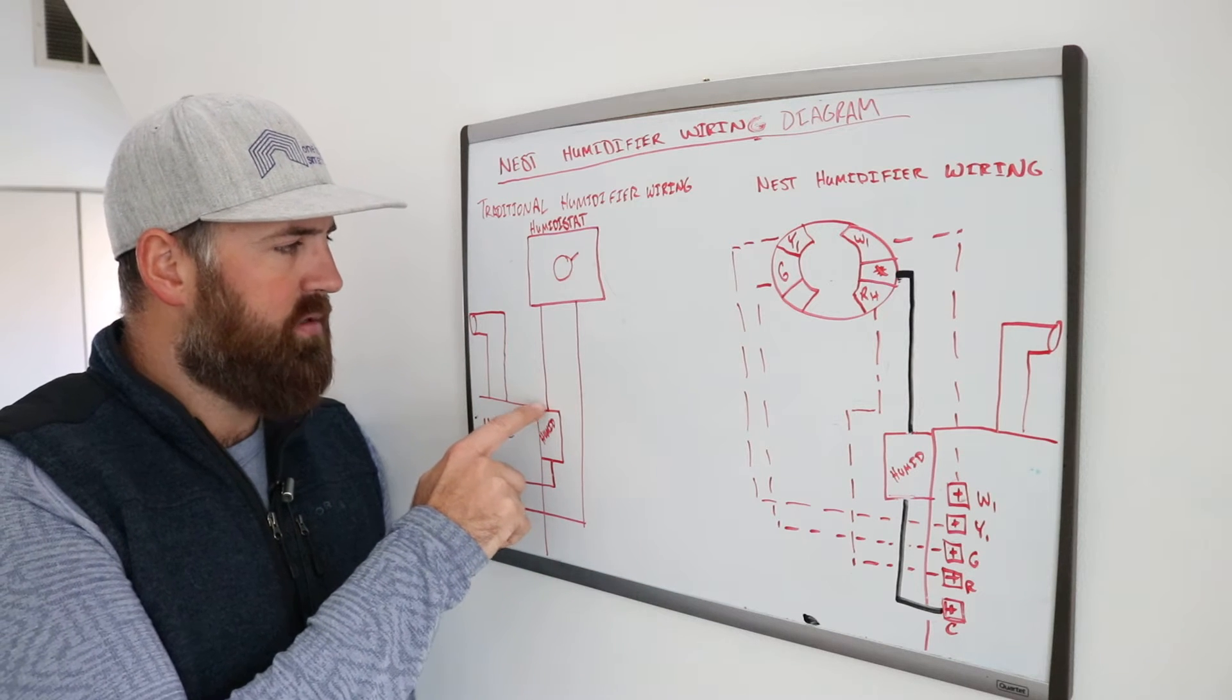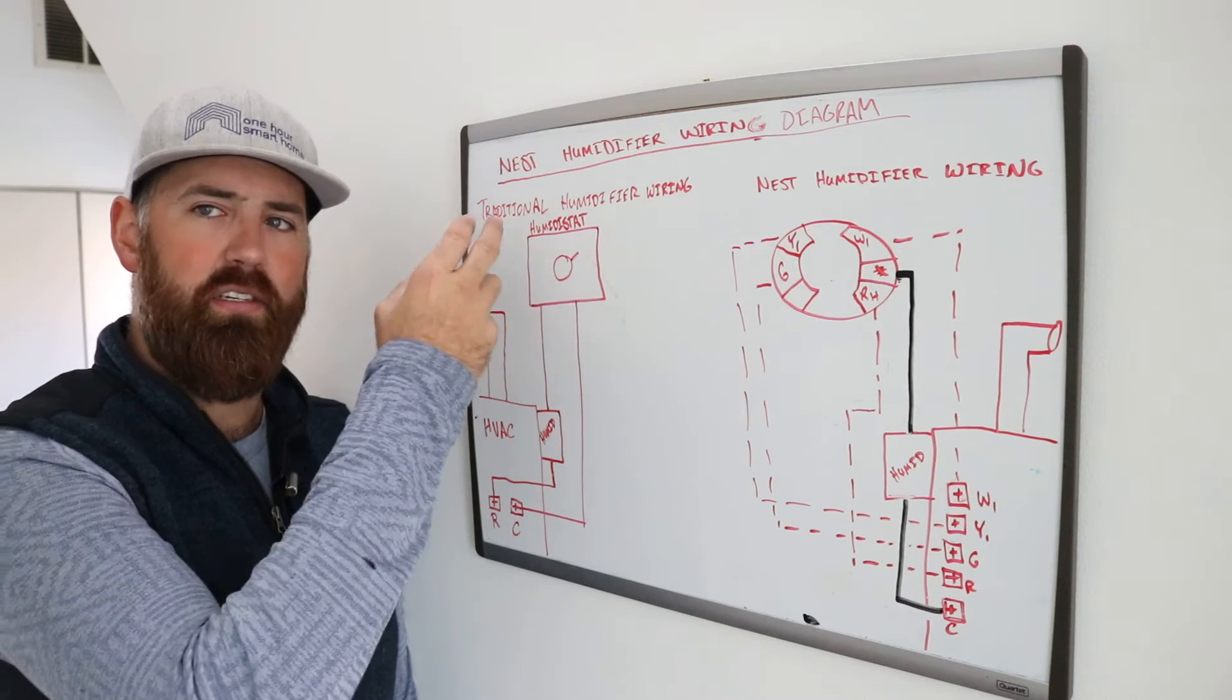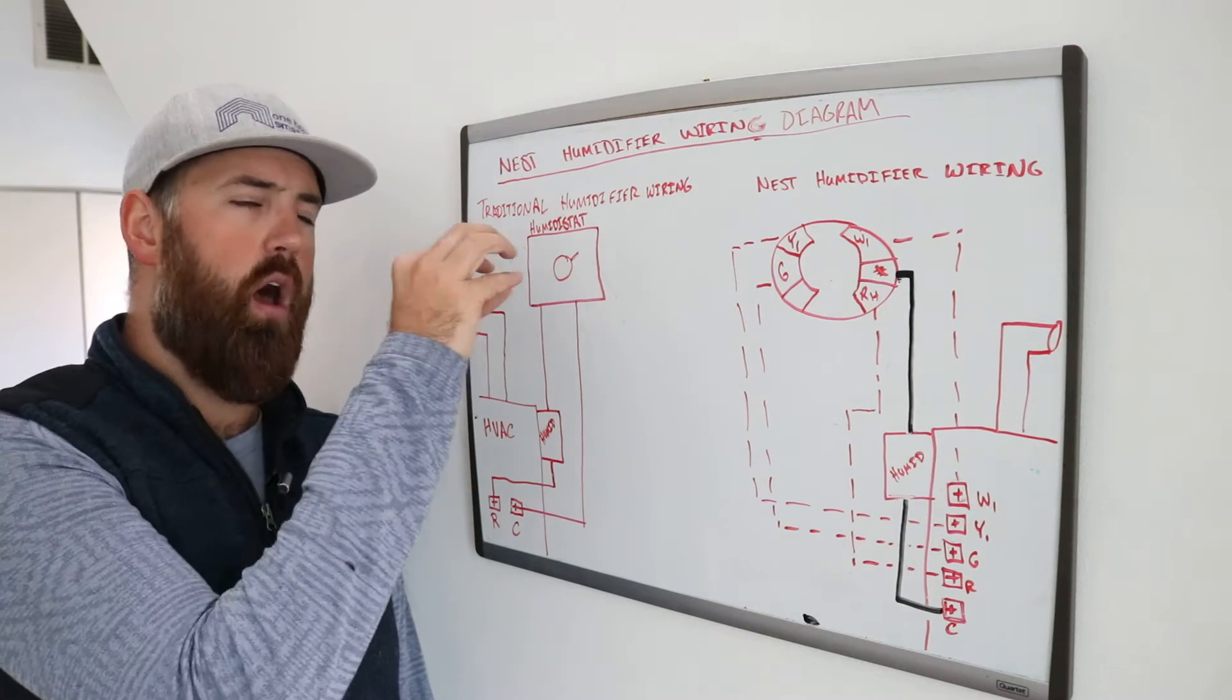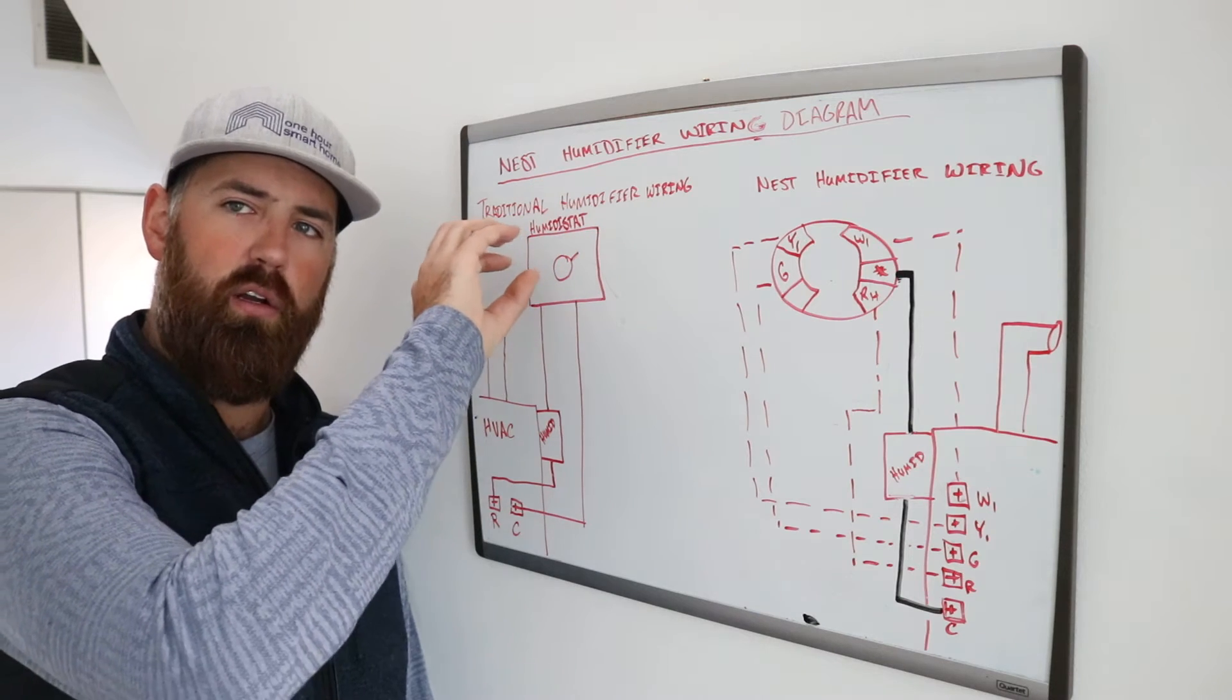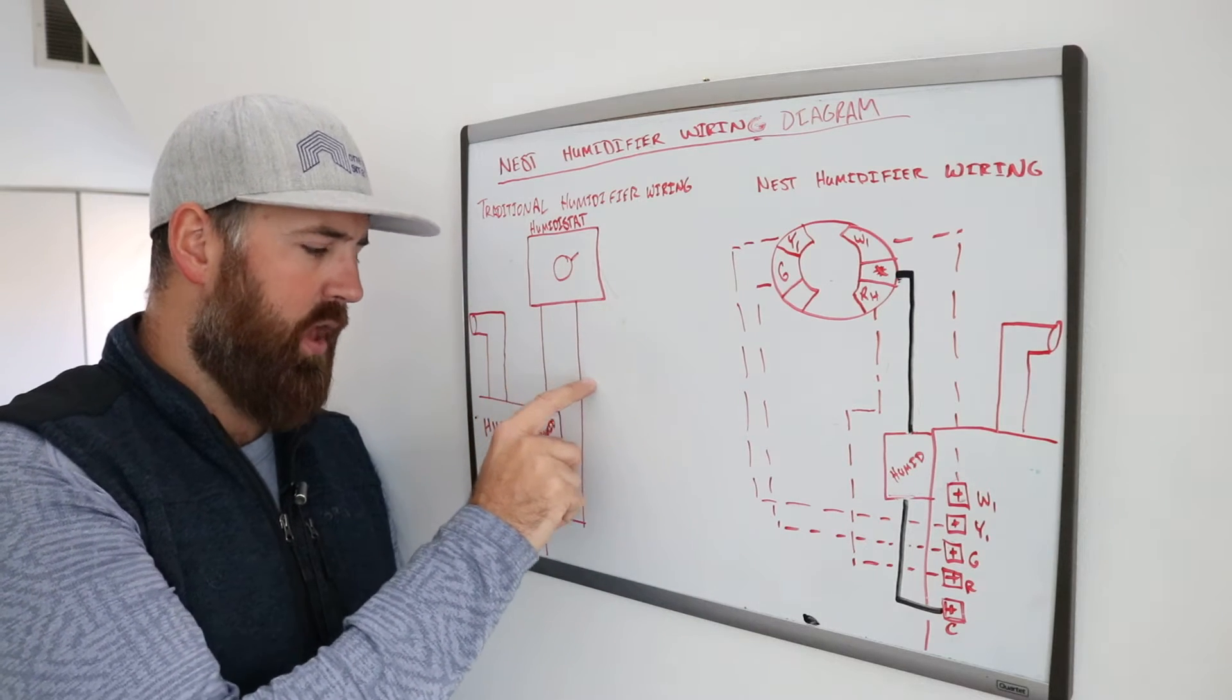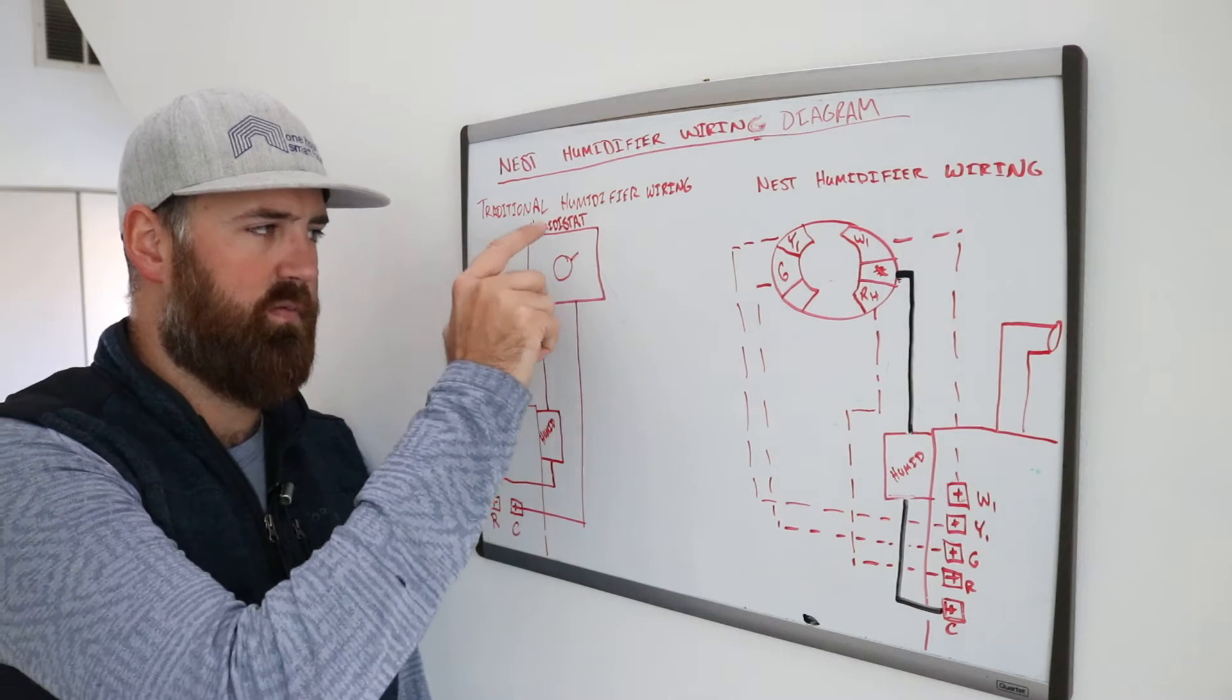And the power goes through the humidifier and to the humidistat which controls the humidity. And all this is is an open close switch really. When the humidity is too low and you've got the humidifier set higher, it's going to close that switch, create a circuit so you'll have power going through the humidifier, down through the humidistat and back to the C terminal, it creates a full circuit here.